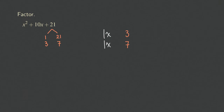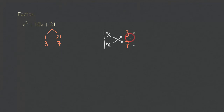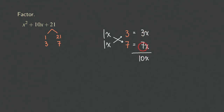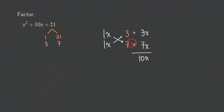The next step is to multiply diagonally, as indicated by the two lines or arrows. One X times seven gives us seven X, and one X times three gives us three X. Adding them together gives us the 10X we need. So positive three X plus seven X gives us positive 10X. We don't need to worry about signs since they're all positive here. This combination works.